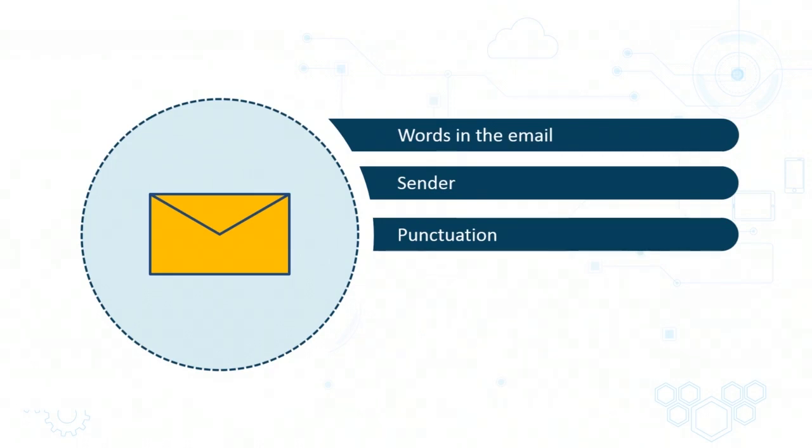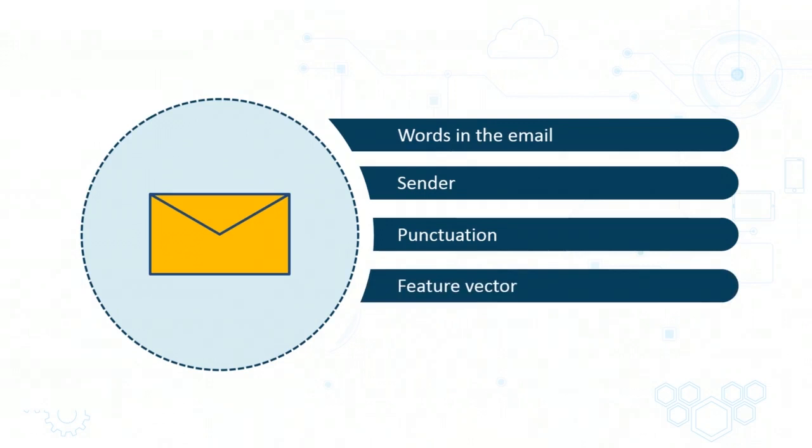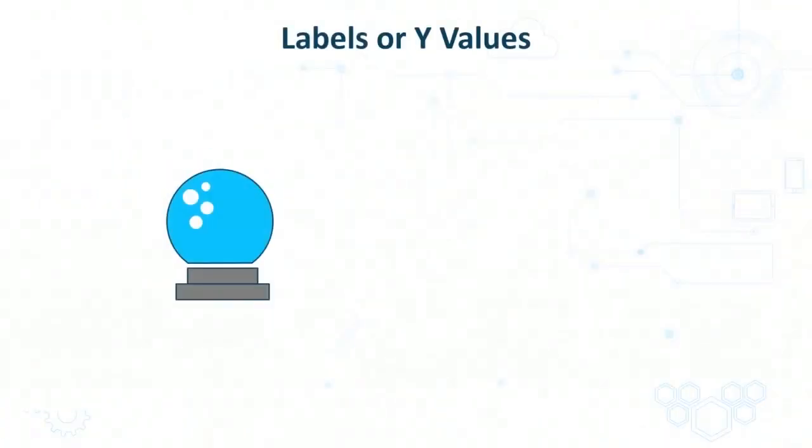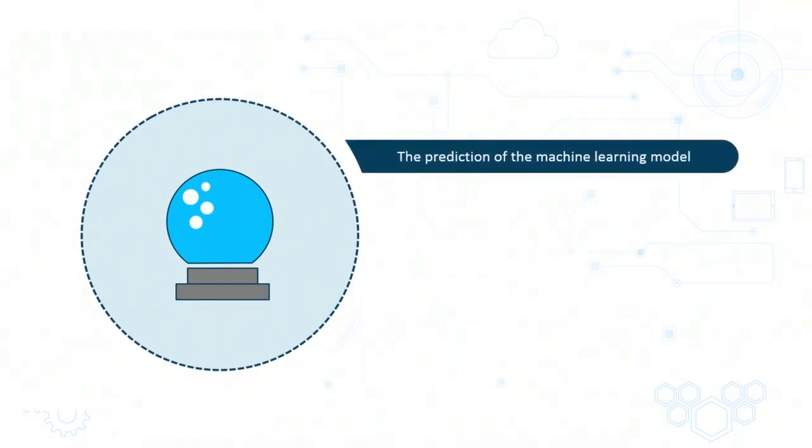All of the input features which are grouped together are referred to as a feature vector. And these can also be called x variables. The job of a machine learning model is to take in the feature vector or the x variables and to produce a y value or a label. That is, it will make a prediction based on the input features.